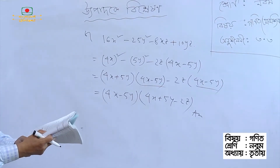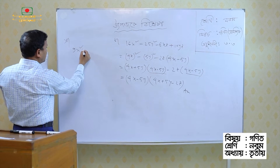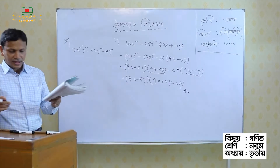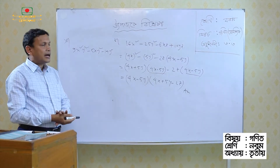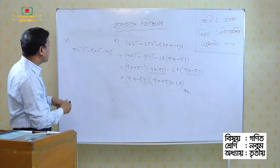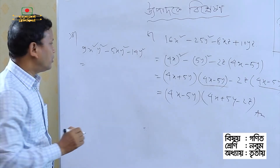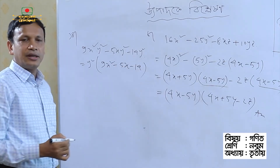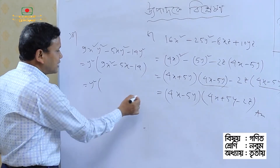We can also see the identity a cube plus b cube and a cube minus b cube. Now, 9x squared minus y squared — 5xy squared minus 12y squared minus 14y squared. We can see that this has 3 terms, and we can see the middle term break method.